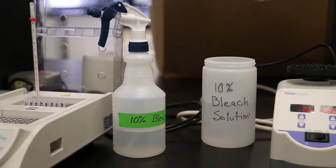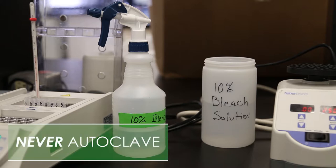Mix up a fresh container of 10% bleach solution daily. We recommend a sealable wide mouth container. The pipette tips and used reaction tubes and caps will go into this solution. A spray bottle with fresh 10% bleach solution is also recommended. We do not ever recommend autoclaving the pipette tips or the reaction tubes.